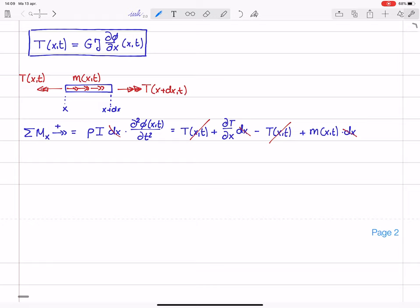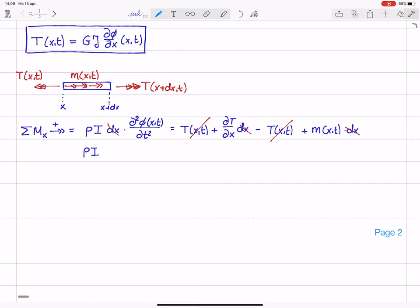So we have this torsion moment on the right hand side. I will develop its Taylor series immediately. So we have T at x comma t plus dT/dx dx like this minus T on the left plus m of x and t times dx. So what we see is that these T's cancel and that the remaining terms all have dx in it.